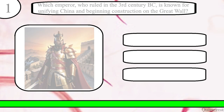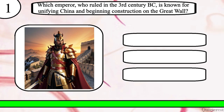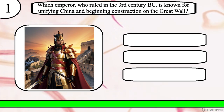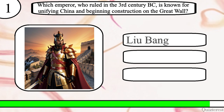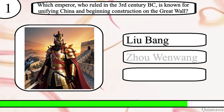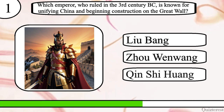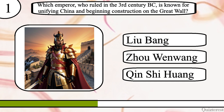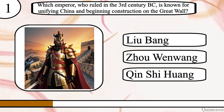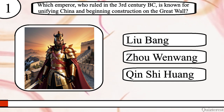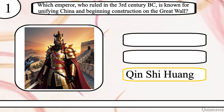Question 1. Which emperor, who ruled in the 3rd century BC, is known for unifying China and beginning construction on the Great Wall? Liu Bang, Zhou Wen Wang, or Qin Shi Huang? The correct answer is Qin Shi Huang.